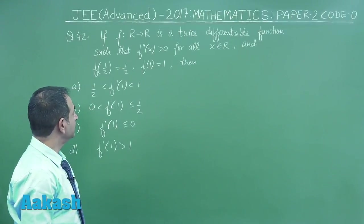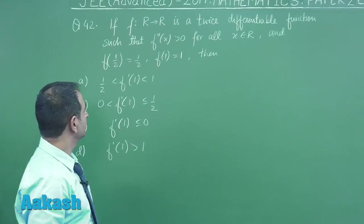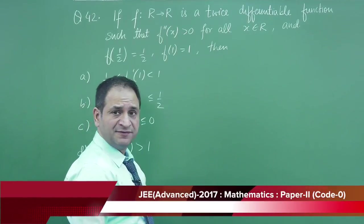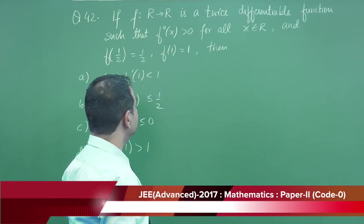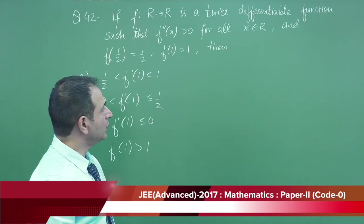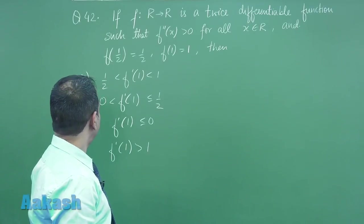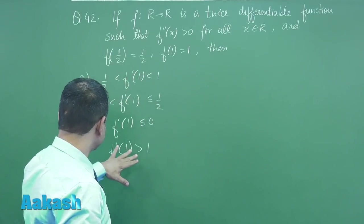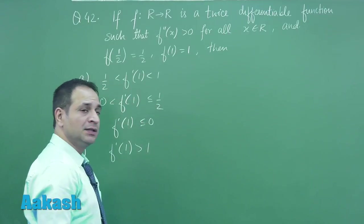The next problem: f: R→R is a twice differentiable function such that f''(x) > 0 for all x ∈ R, and f(1/2) = 1/2 and f(1) = 1. Then which of the following is correct? We are asked about the derivative at 1, the minimum or maximum value.